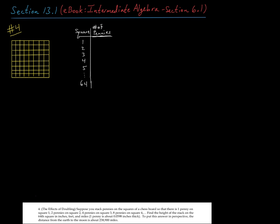All right, problem number four deals with what's called the effects of doubling. So suppose you stack pennies on the squares of the chessboard so that there's one penny on square one. So let's say I have my chessboard here and here's square one. So there's one penny there and then there's two pennies on the second square and then there's four pennies on the third square and then eight pennies, 16 pennies, 32 pennies, so on and so forth. So I'm just repeatedly doubling the number of pennies as I move from square to square.